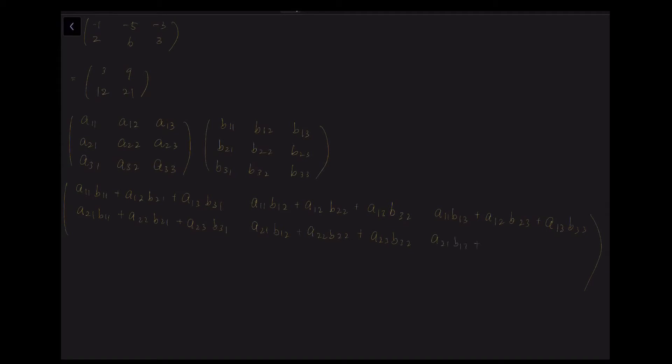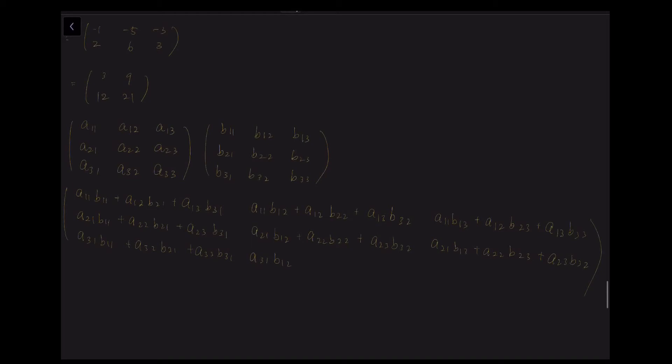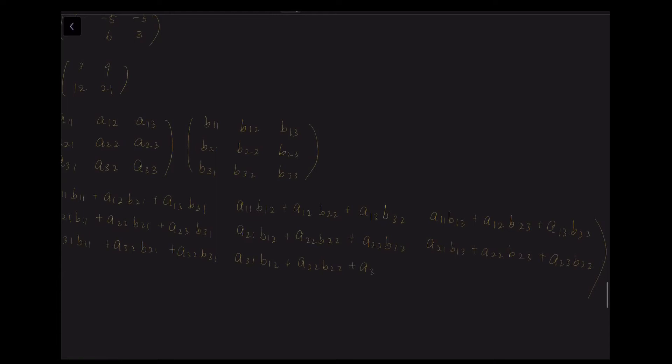And the final column: A21 times B13 plus A22 times B23 plus A23 times B33. Now the final row: A31 times B11 plus A32 times B21 plus A33 times B31. And the second column we have A31 times B12 plus A32 times B22 plus A33 times B32. Finally the last column: A31 times B13 plus A32 times B23 and A33 times B33.